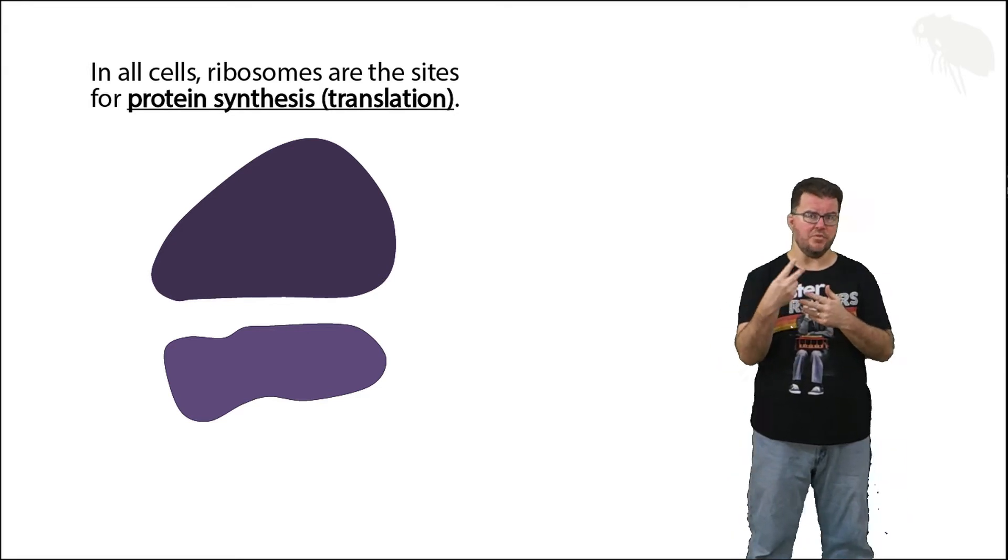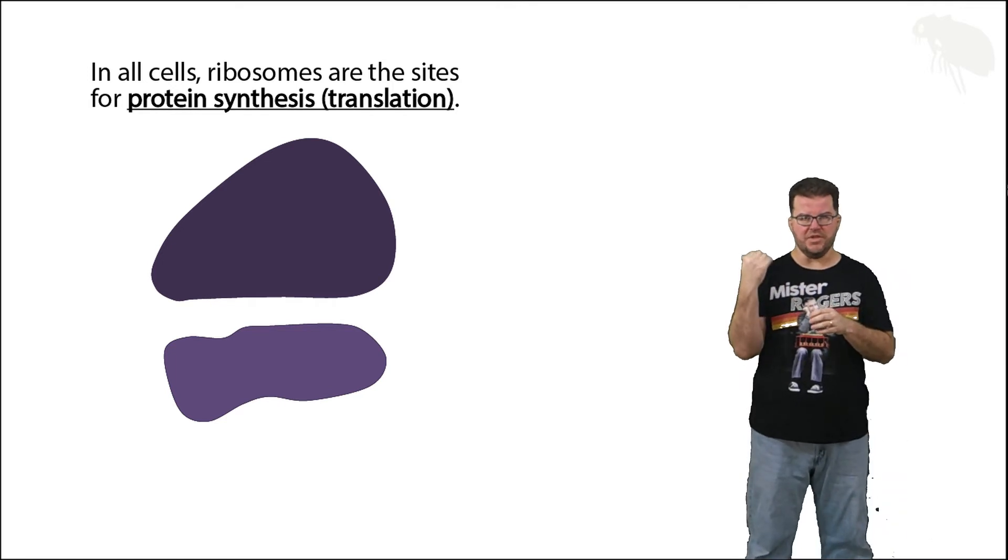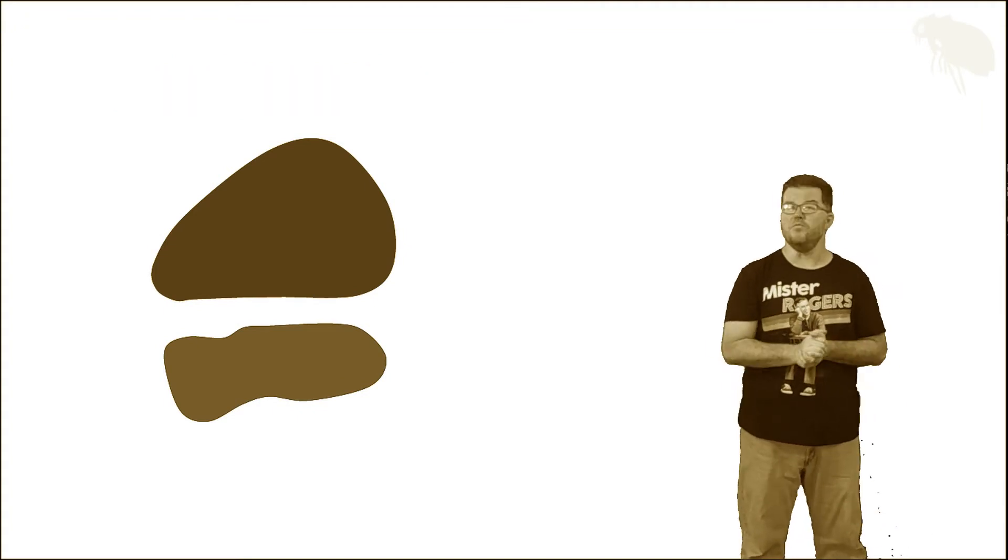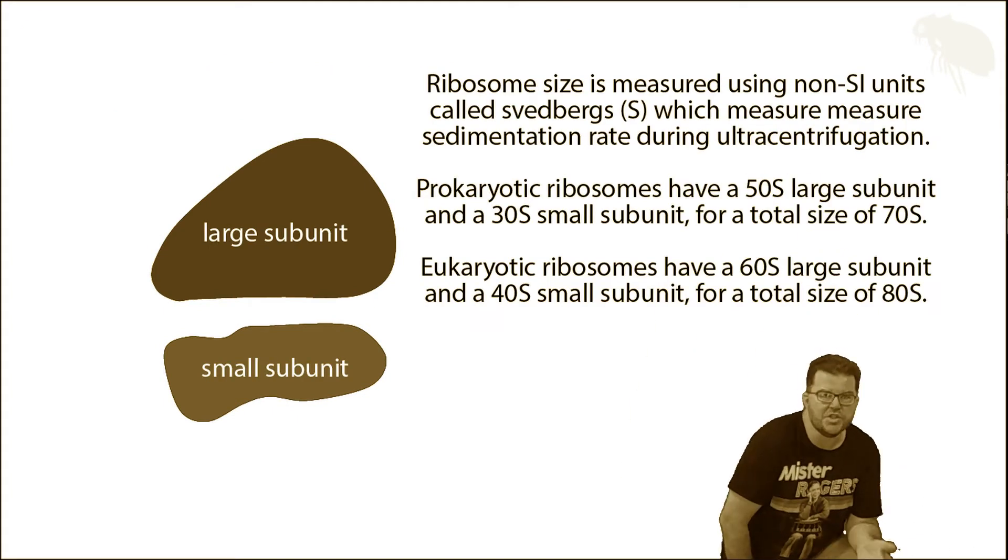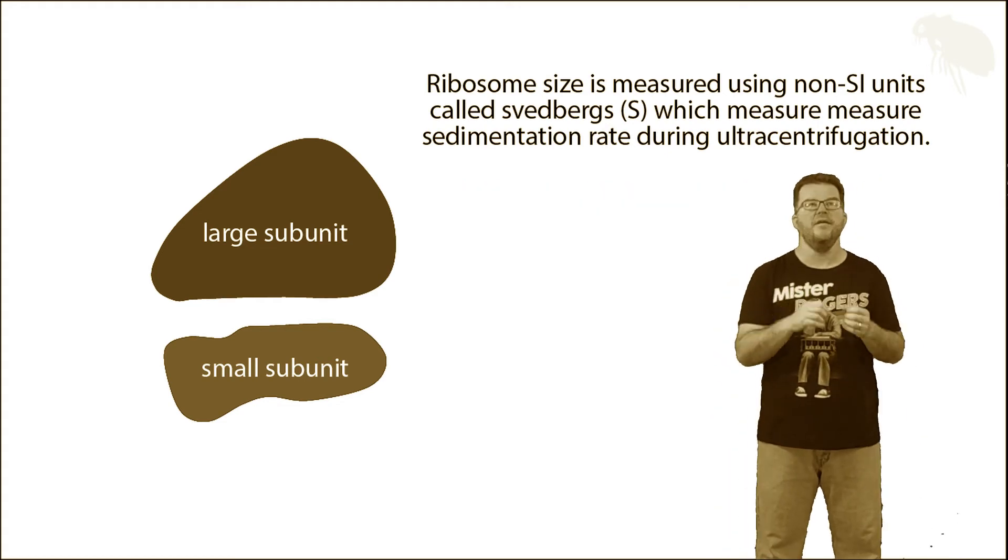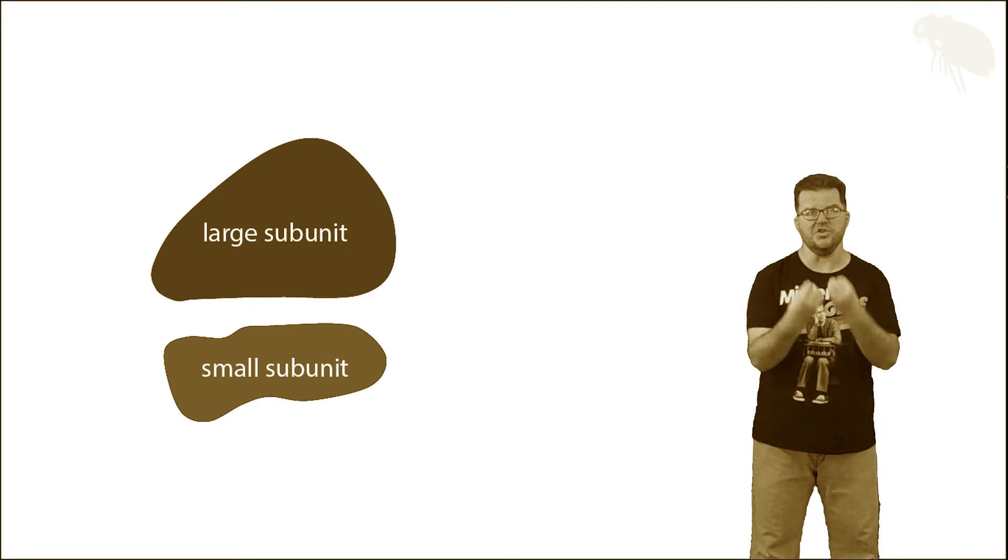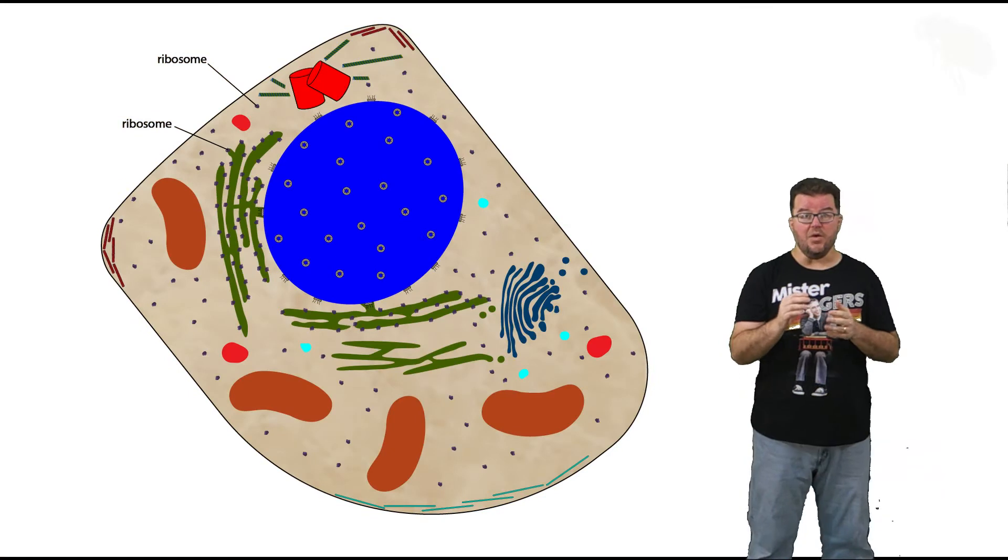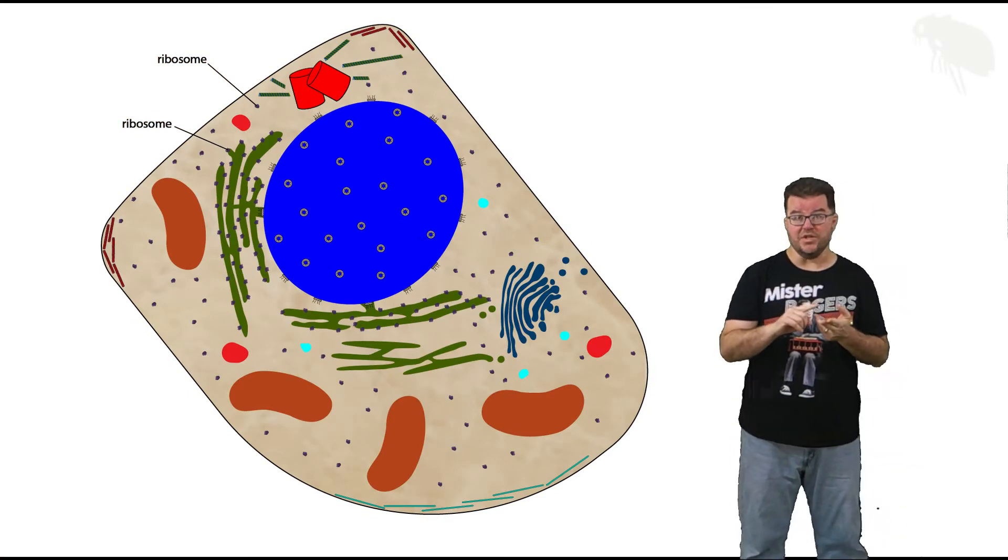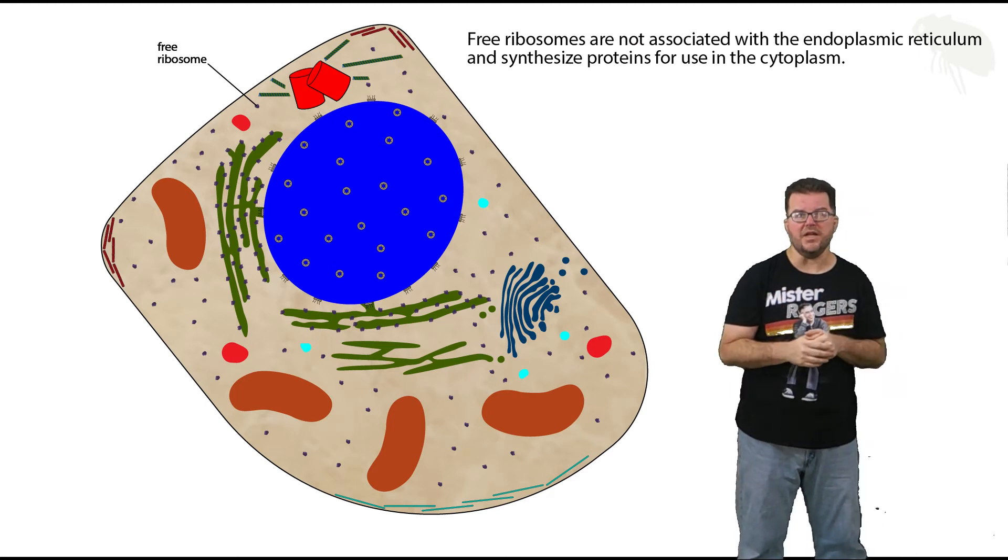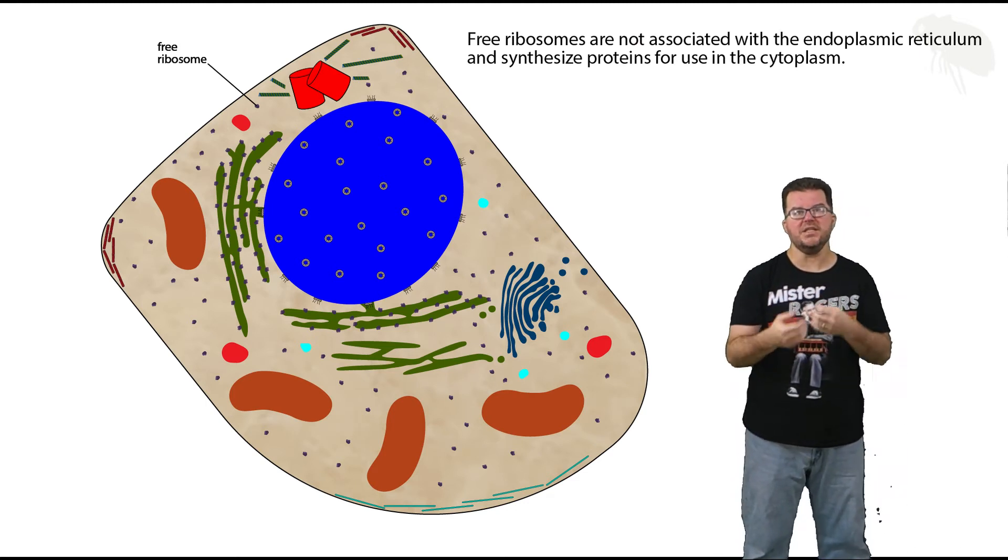Now in the case of eukaryotes, we often talk about there being two types of ribosomes. So I actually want to warp back in time to before we zoomed in and look at those two ribosomes I originally labeled. One is called a free ribosome and one is called fixed.